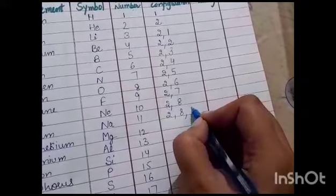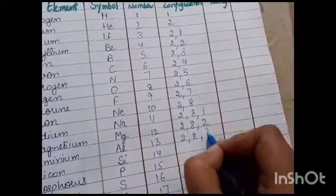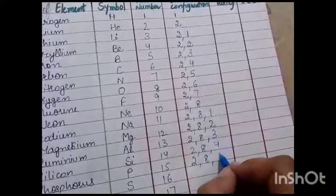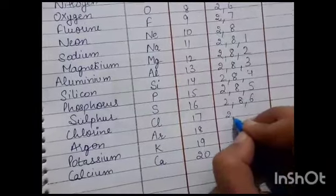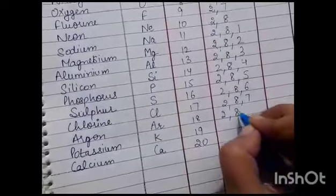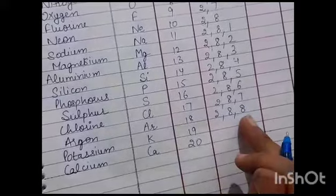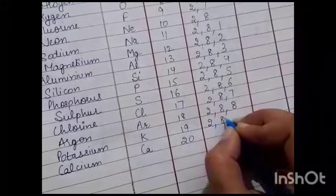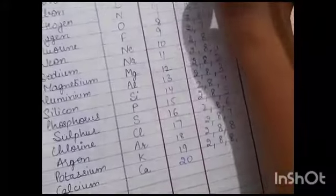2, 8. Now the 11th electron goes into the M shell. 2, 8, and 8. Now 2, 8, and 8 shell is complete. Now the 19th electron goes into the L shell.